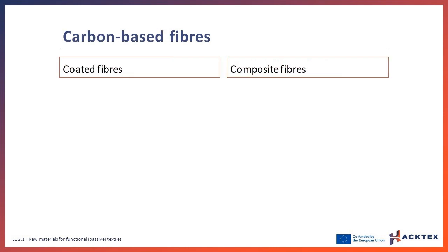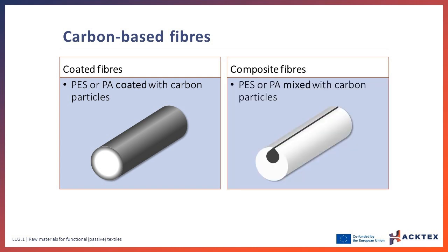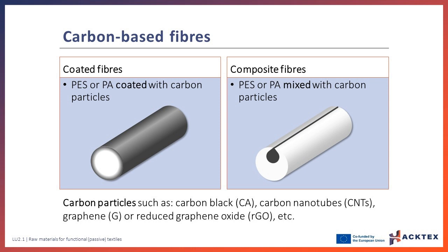Pure carbon fibers used in composite materials are intrinsically conductive. However, due to their high stiffness, they are not widely used for textile applications in garments. Instead, the most common carbon-based fibers are extrinsically conductive fibers, obtained by coating or mixing polyamide or polyester with carbon particles and derivatives such as carbon black, carbon nanotubes, graphene, or reduced graphene oxide. Some of the most known commercial examples are Resistat fibers from Shakespeare Company, Beltran from Kanebo Japan, and Negastat from Barnet.